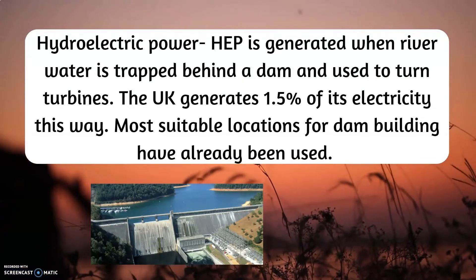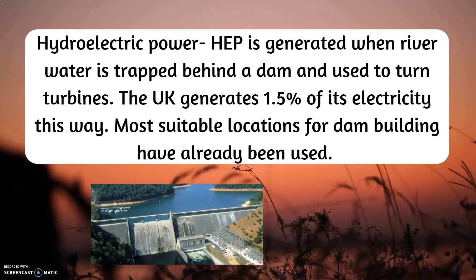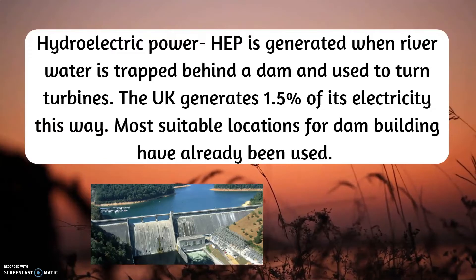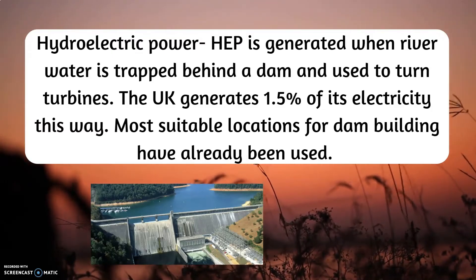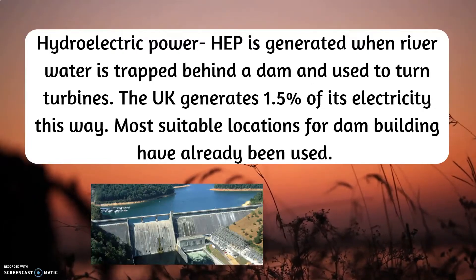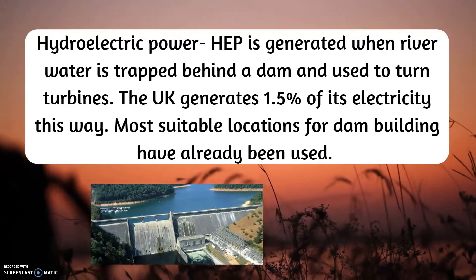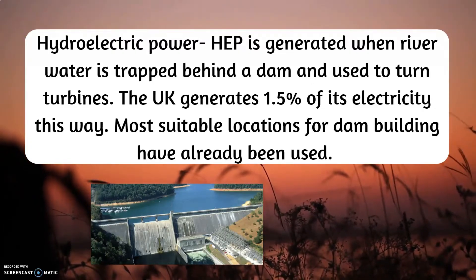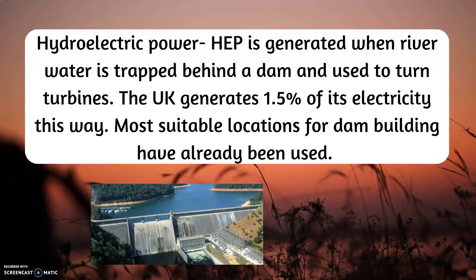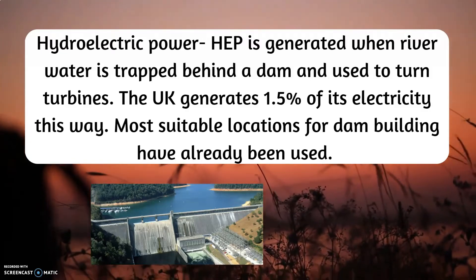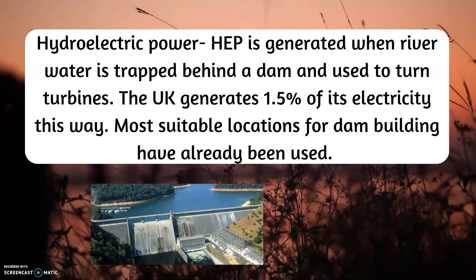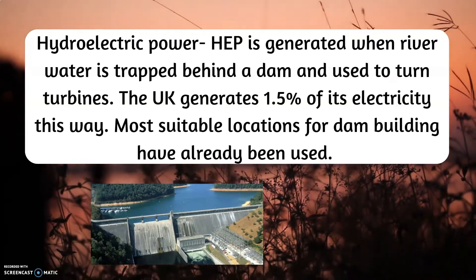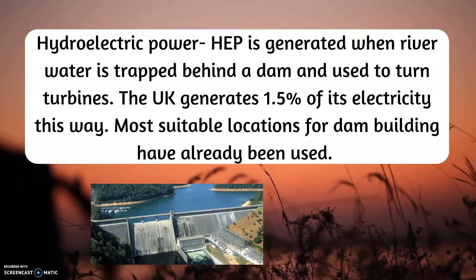Hydroelectric power, also known as HEP, is generated when river water is trapped behind a dam and used to turn turbines. The UK generates 1.5% of its electricity this way. Its most suitable locations for dam building have already been used, so this is running out.